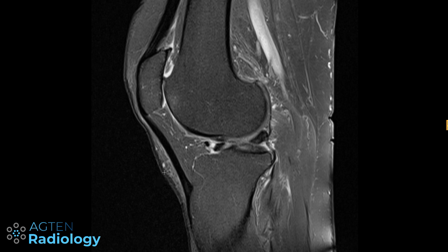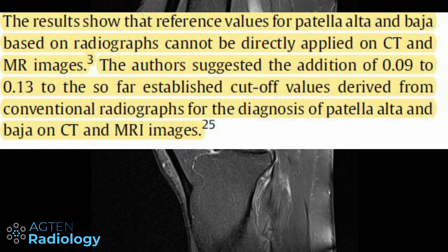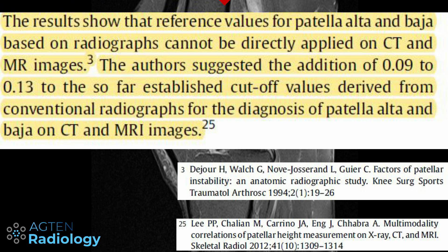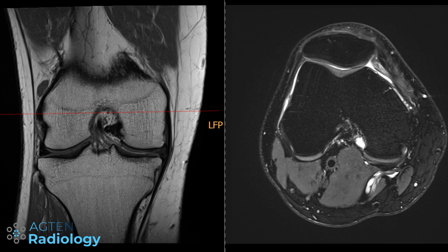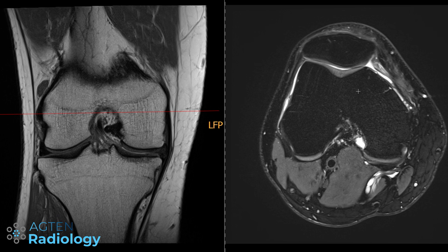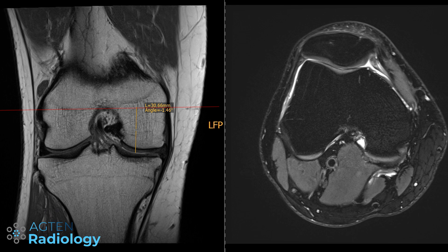Studies have shown that if you use the Insall-Salvati index on MRI, you need to increase your cutoff values compared to conventional radiographs for diagnosing patella alta — some suggest an increase in the range of 0.01 to 0.13. Regarding trochlear dysplasia, what I sometimes do is measure the depth of the groove. On coronals, you go three centimeters above the joint line, then go to the corresponding transverse image and measure the depth of the sulcus.